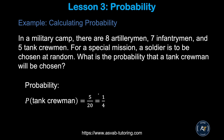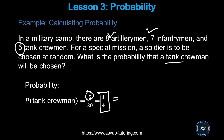Here is another practice problem: in a military camp there are 8 artillery men, 7 infantry, and 5 tank crew. For a special mission, what is the probability of a tank crew man being chosen? The desired outcome is 5 tank crew. The total is 8 plus 7 plus 5, which is 20. So the probability is 5 out of 20. Simplified, that gives you 1 over 4. As a percentage, that is a 25% chance a tank crew man will be chosen from this group.